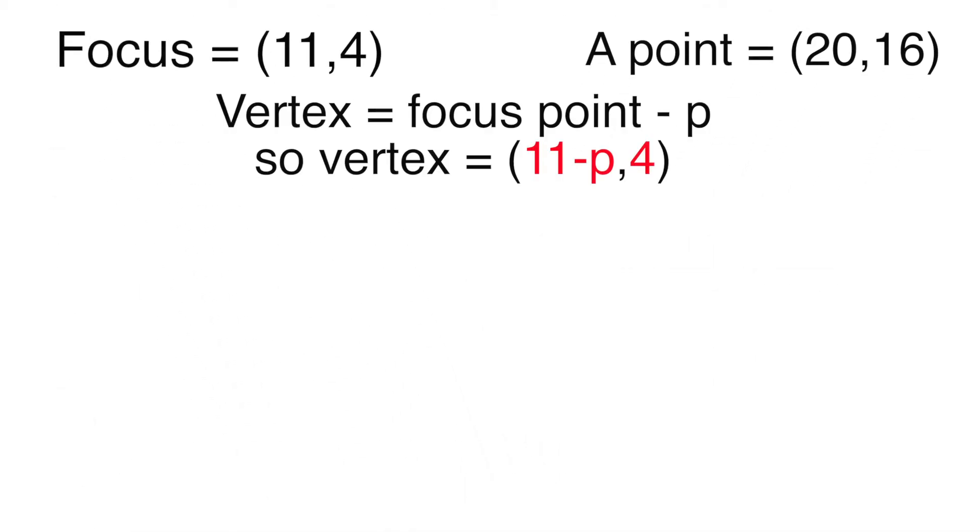The vertex would be P detracted from the focus. So we plug this into the equation where the coordinates of the vertex normally are. Make sure the x and y sides are correct and solve for P. Once you know P, you've solved the equation. And once you've solved the equation, you rule the world.